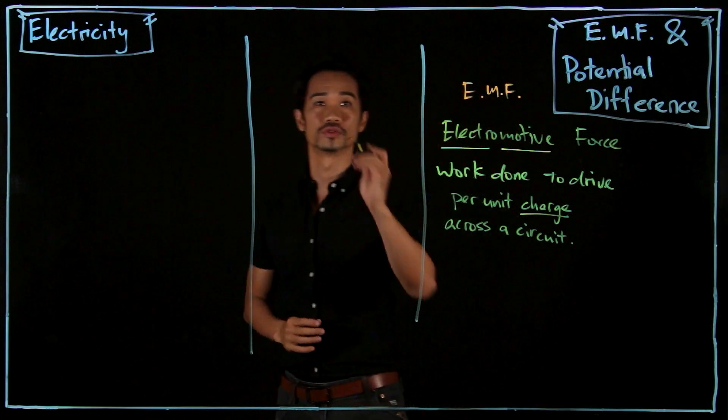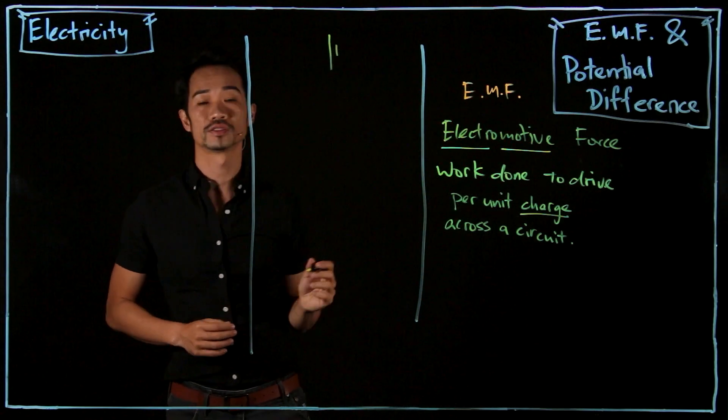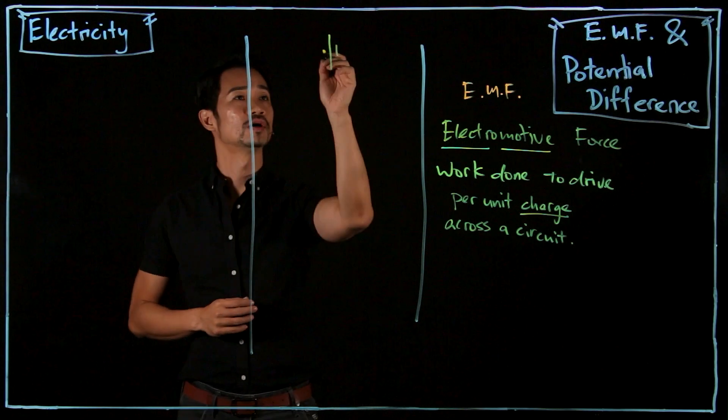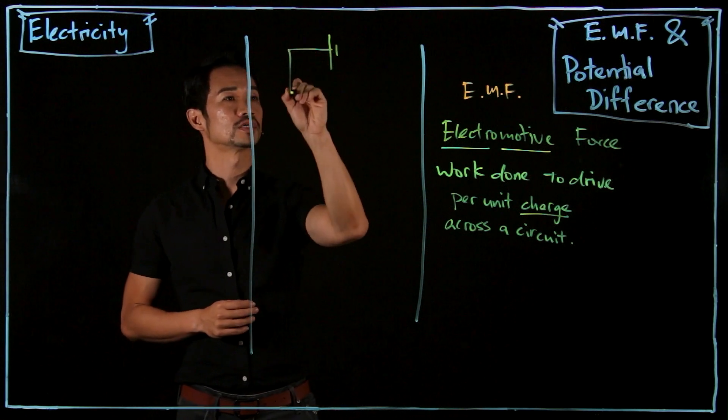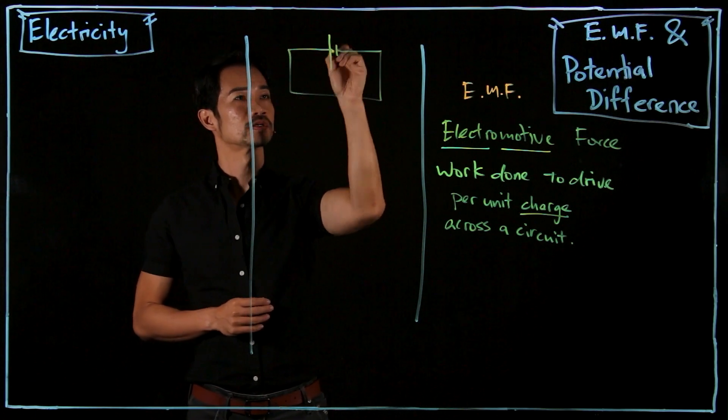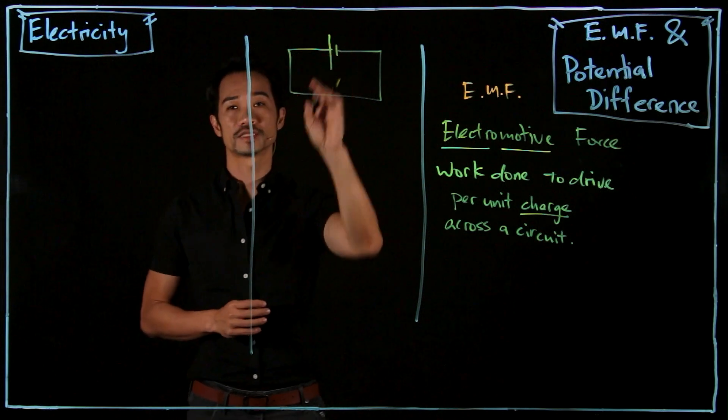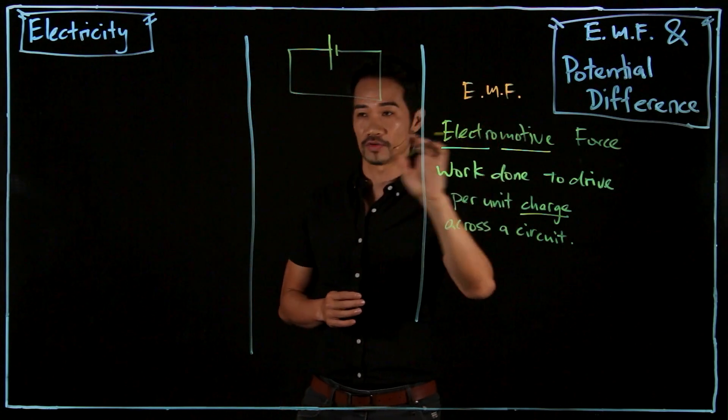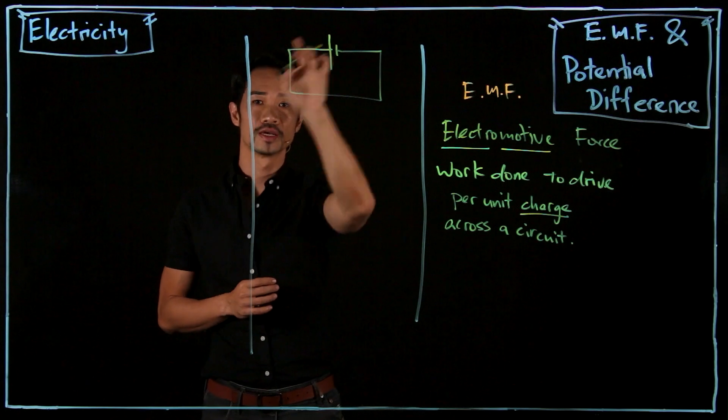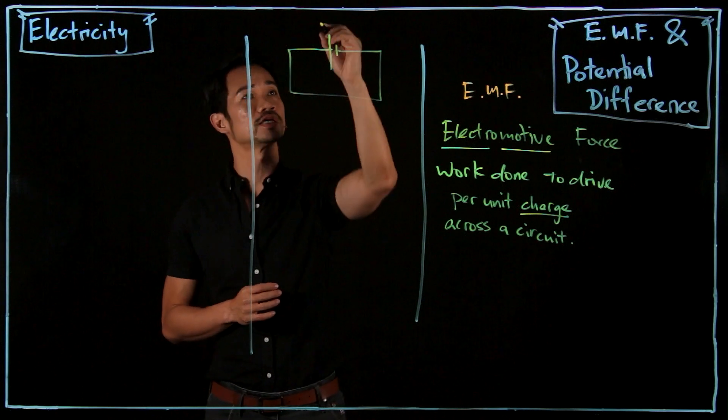Let me draw this out for you. So can you still remember this symbol? This is a dry cell or a battery, and then this is a closed circuit.